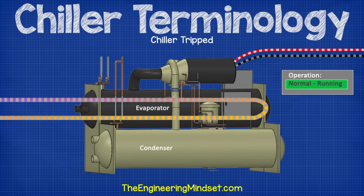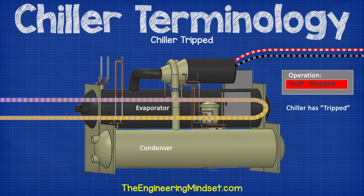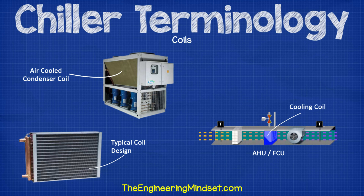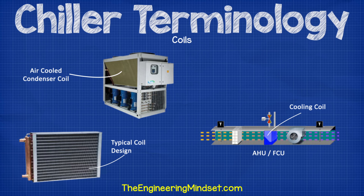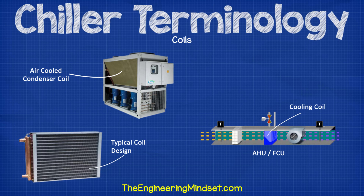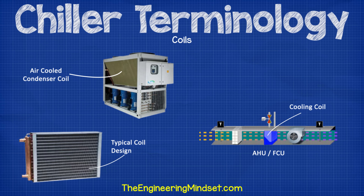Chiller tripped. This refers to the chiller turning off by itself through the internal controls due to a detected fault, or because it has reached the limits of a design set point — for example, a high or low pressure or temperature. The chiller therefore turns itself off to protect itself from damage. Coils. Coils refer to a heat exchanger. A cooling coil would mean a heat exchanger in an air handling unit or a fan coil unit which receives the chilled water and exchanges its cool into the air. A condenser coil would refer to the condenser of an air-cooled chiller which receives the hot, high-pressure refrigerant and uses the ambient air to condense this into a liquid.